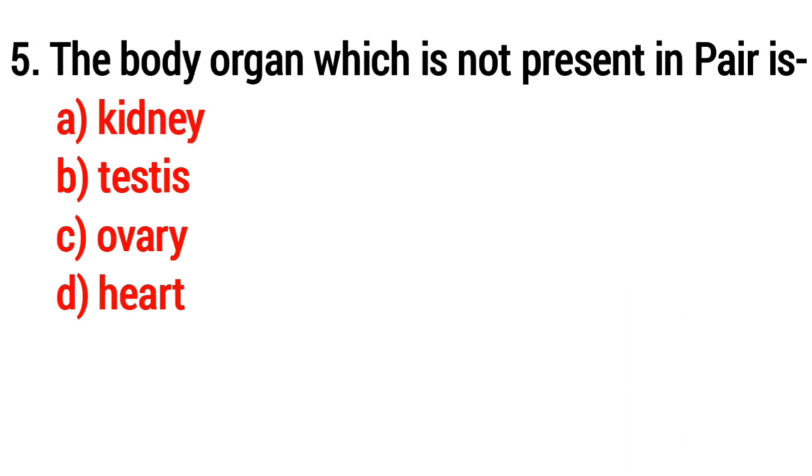Question number 5: The body organ which is not present in pairs? Answer: Option D, heart.